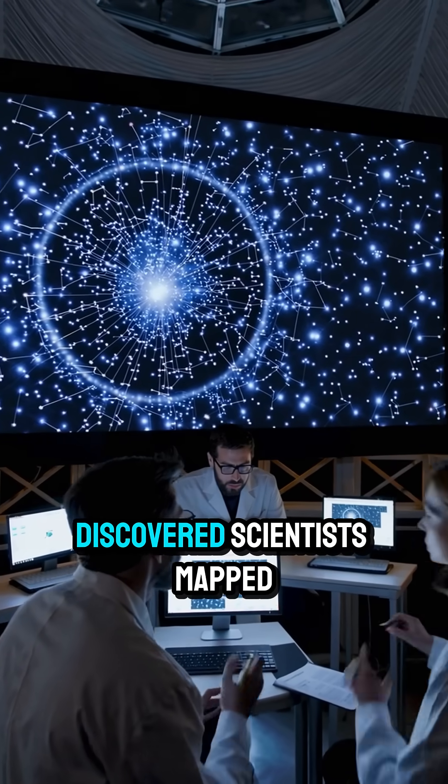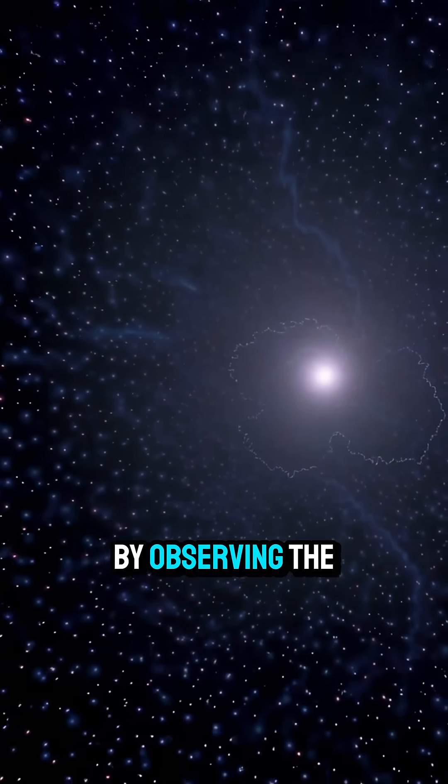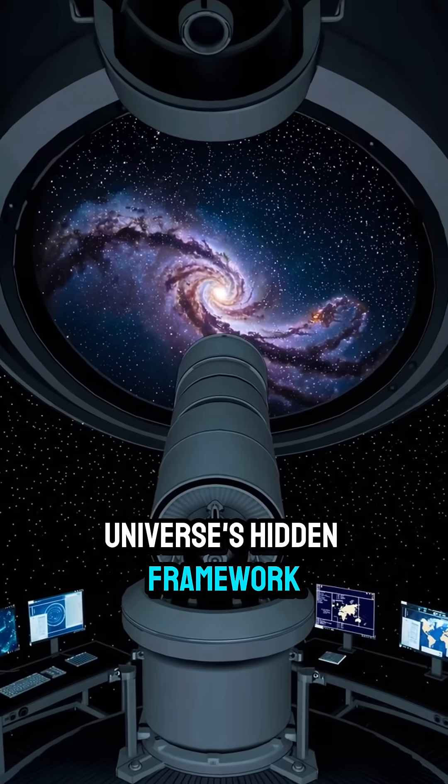How is it discovered? Scientists mapped the cosmic web by studying how galaxies move and interact. By observing the way light bends due to gravity, they uncovered the universe's hidden framework.